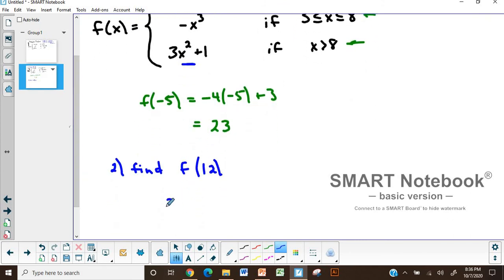So we will use the last equation that defines our function. f(12) equals 3 times 12² plus 1. 3 times 12² is 144, so 3 times 144 is 432, plus 1 is 433.